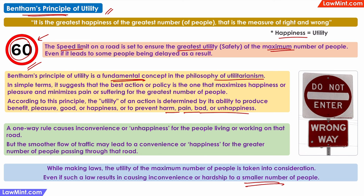Another example I have experienced is when a street near my house was converted into a one-way. Since I had to frequently go to a shop on that street, it became an inconvenience for me because I had to go around and drive almost an extra 2 km to enter the street from the other side. Similarly, all the people who had offices or shops on that street were inconvenienced. But the one-way created a utility for a much higher number of people using that street by reducing the traffic jams that used to happen there.